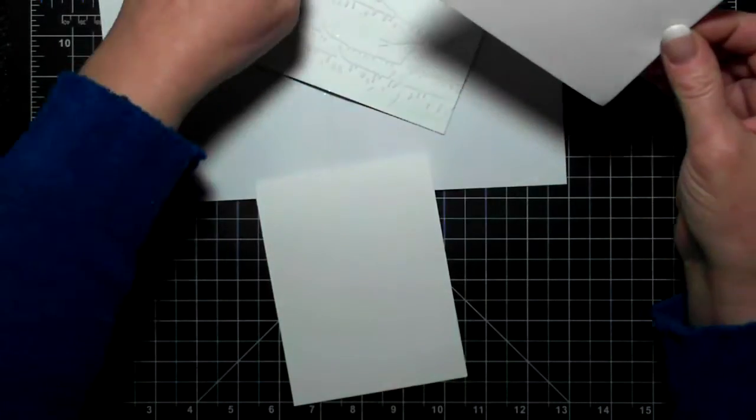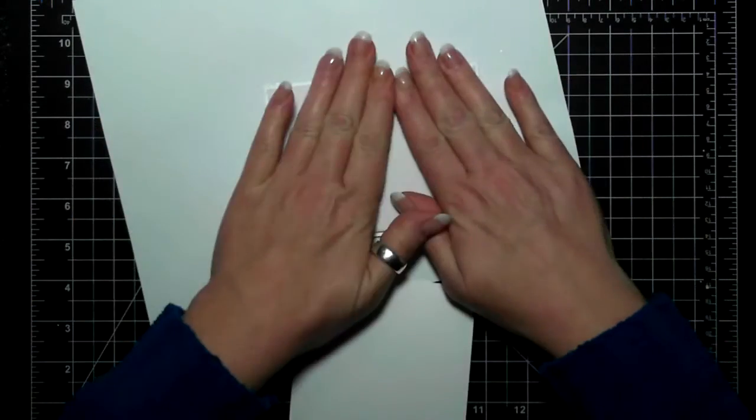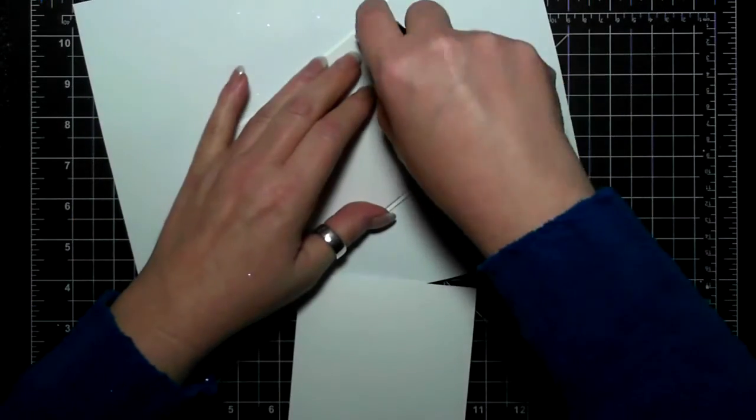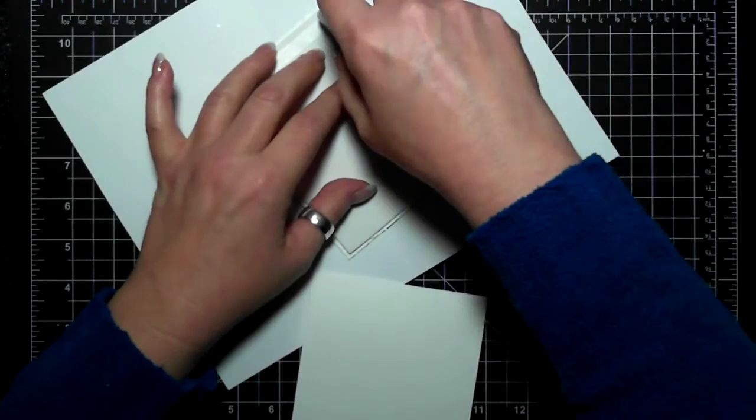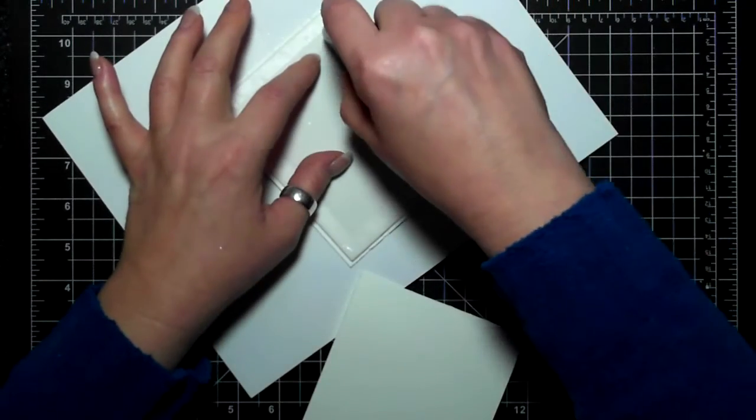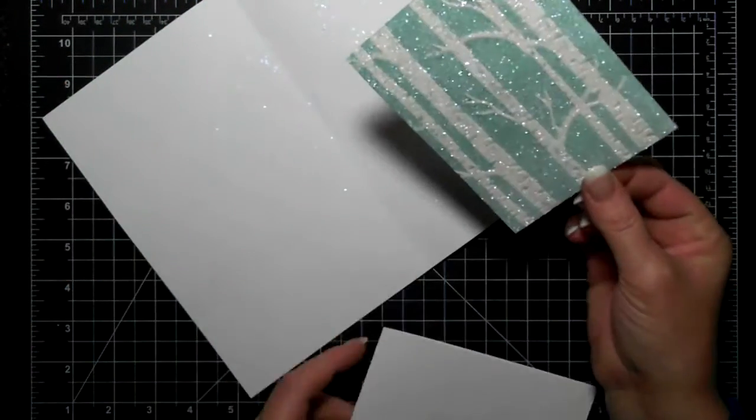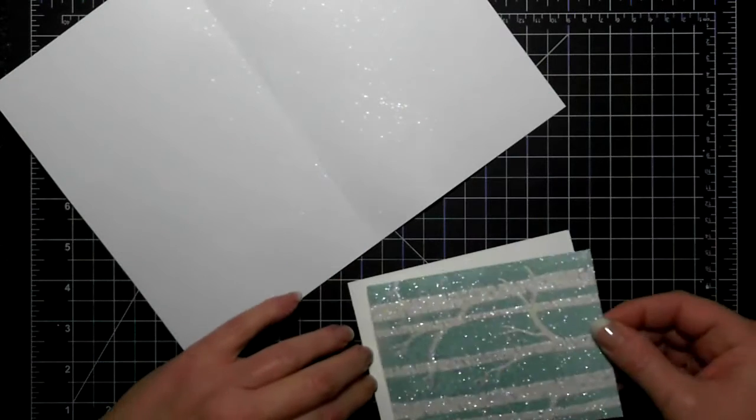I'm putting some fast fuse on the back of a little bit of fun foam to keep everything nice and straight, and then a little bit of fast fuse on the back of the fun foam. I'm going to be adhering that to the whisper white thick card base.